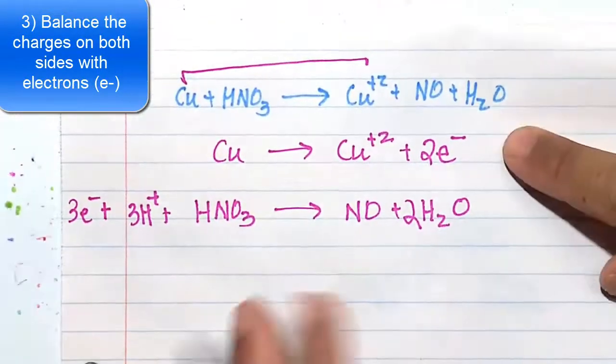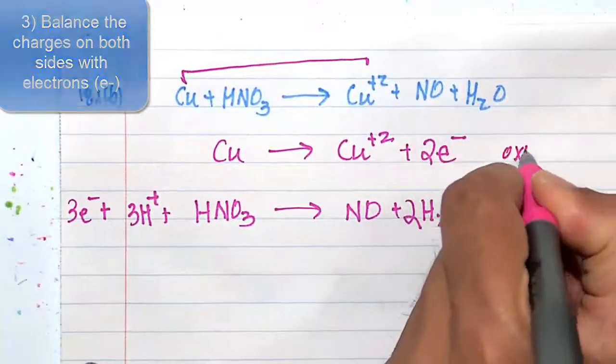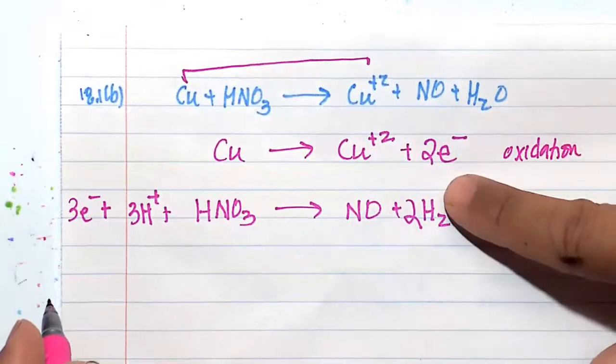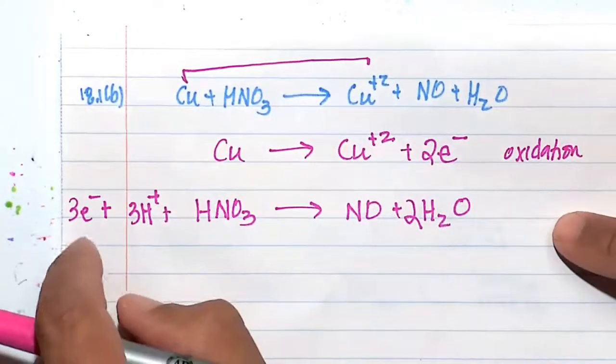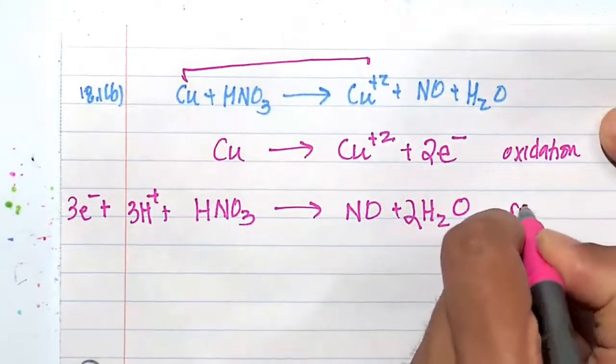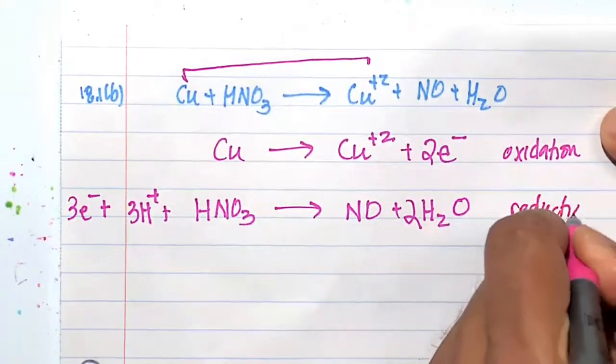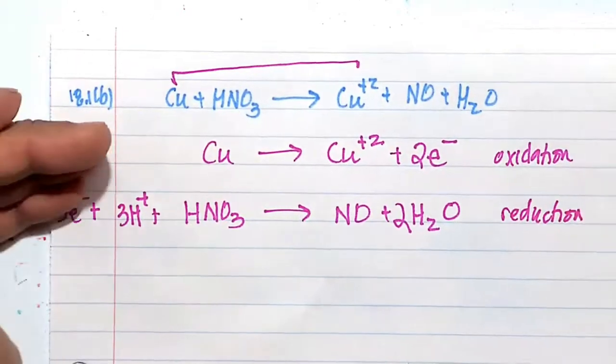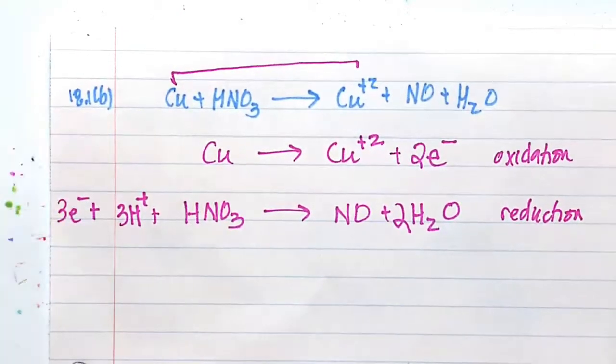Here we lost 2 electrons. Losing an electron is called oxidation. You may remember Leo Ger—lose electrons oxidation. Ger gain electrons reduction. Here we gain 3 electrons, and that's called a reduction. So we have split this redox reaction into its component oxidation half reaction and its reduction half reaction.